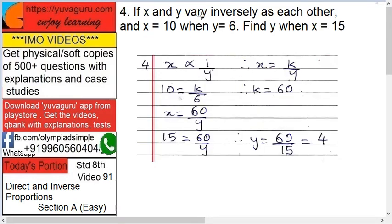If X and Y vary inversely as each other and X equals 10 when Y equals 6, find Y when X equals 15. Same problem as the earlier one, only the difference is it's inversely over here.